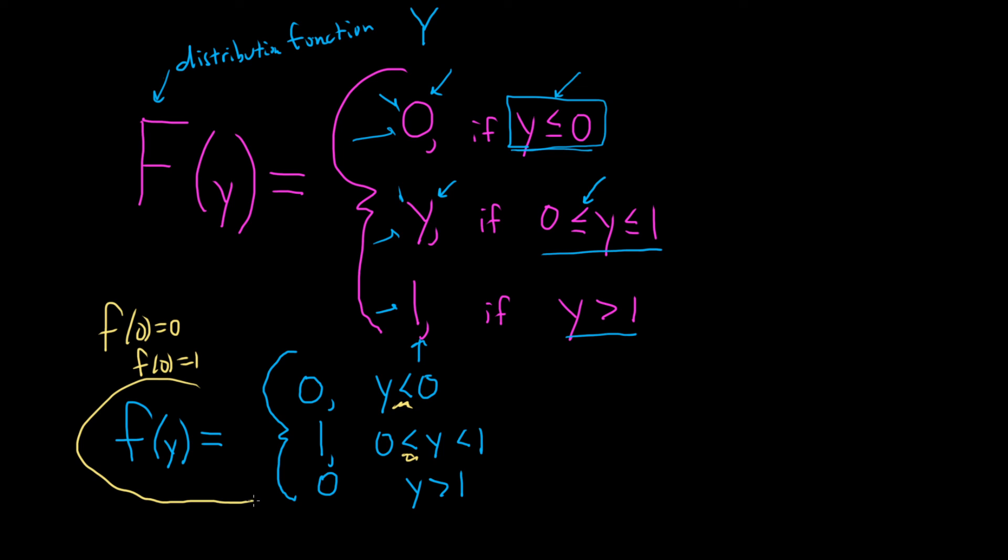And this here would be your density function. So given a distribution function, all you have to do is just take the derivative of each piece and then just think about what happens at the endpoints. In this case, it wouldn't make any sense to include the endpoints. I hope this video has been helpful.